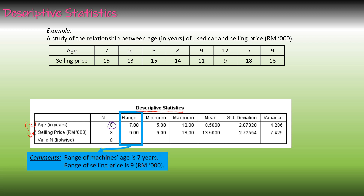The range of machine's age is 7 years. The range of selling price is RM9,000. Minimum value is the lowest value and maximum value is the highest value.